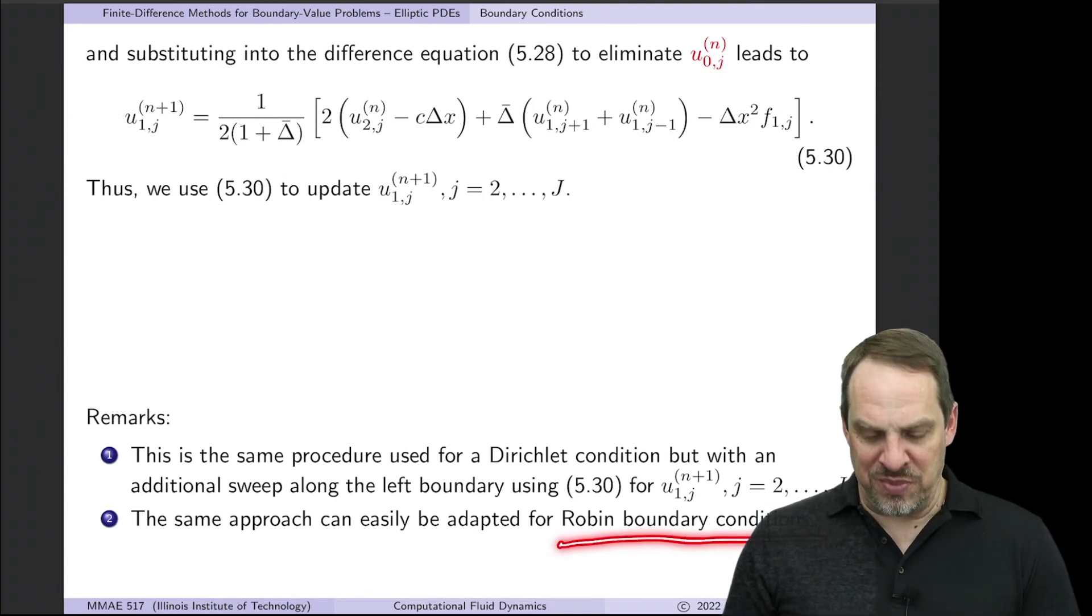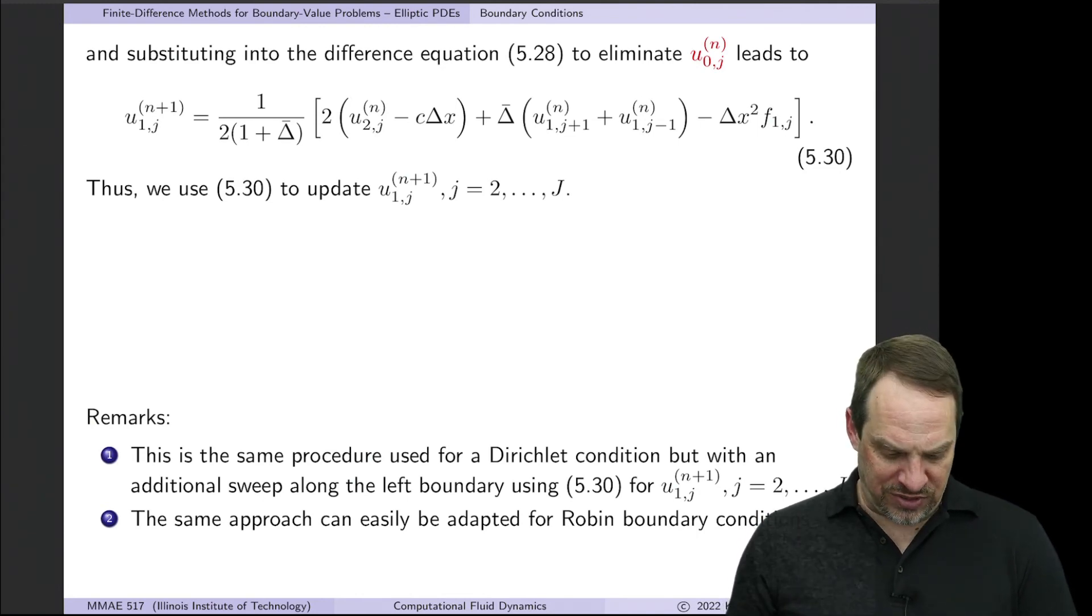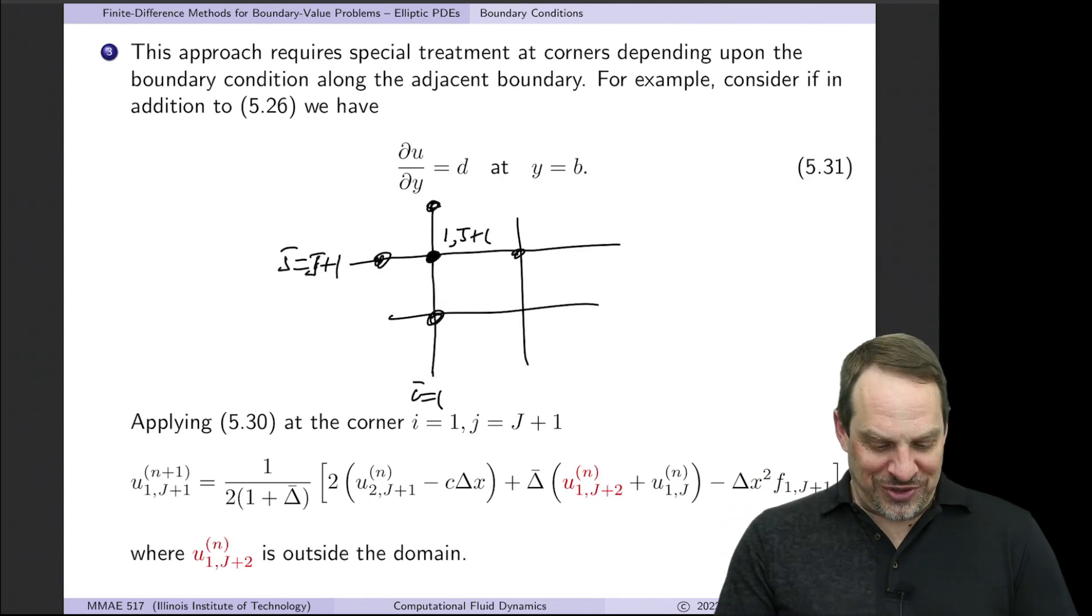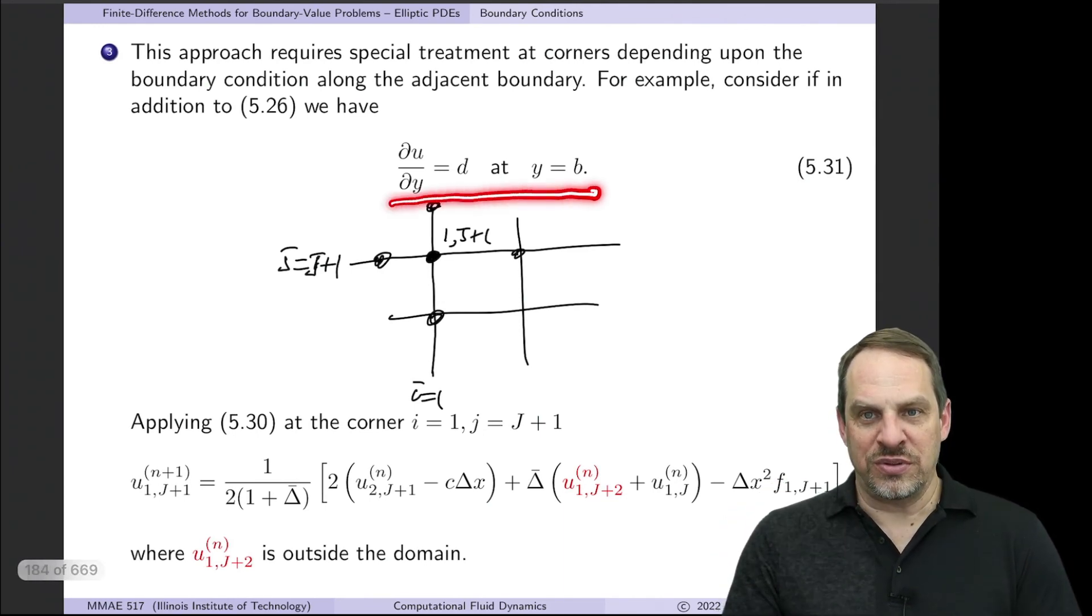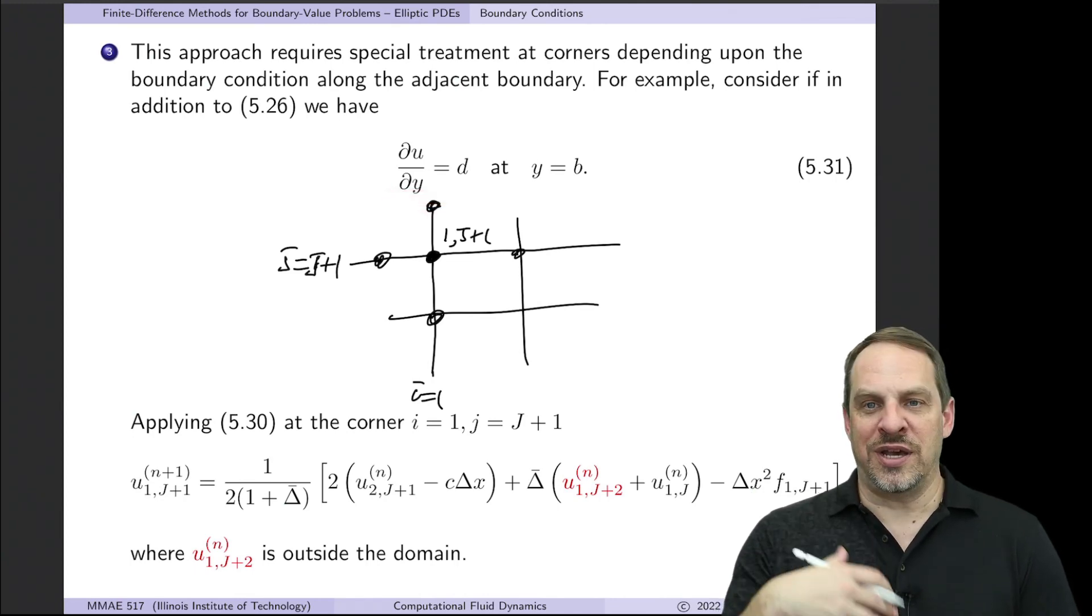You can easily adapt this for the Robin boundary condition, which was the case that we had in the extended fin example with essentially no difference in how it's done. Now what would happen if we also had a Neumann boundary condition along the top? So along the top boundary, if we had partial U partial Y is equal to some known constant D, then how do we do that?